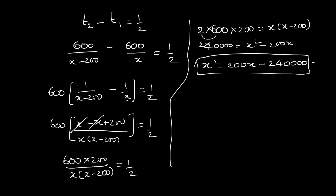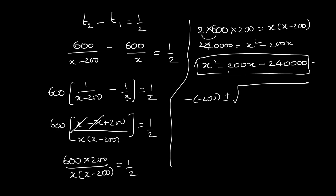Now we have to solve this equation. We can do it either by factorization or by the direct formula. Better to go with the direct formula: x equals minus b plus or minus root of b squared minus 4ac, all divided by 2a.